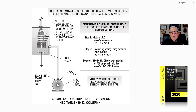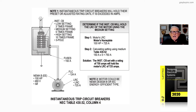Most of the time the overcurrent device sizing is mainly for short-circuit current and ground faults, allowing the motor to start. Notice the overload protection is not mentioned here, because you're sizing it greater than 125 percent of the motor nameplate, as required when we review 430.6(A) of the code.